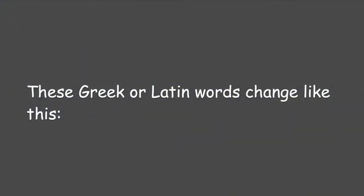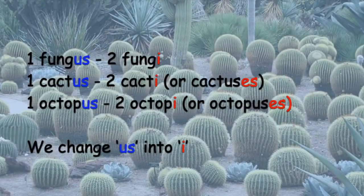These Greek or Latin words change like this. One fungus, two fungi; one cactus, two cacti — or two cactuses; one octopus, two octopi — or two octopuses. We change US into I.